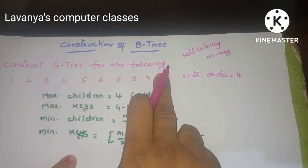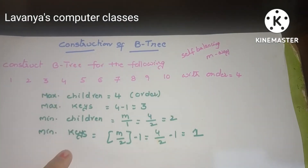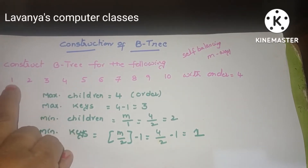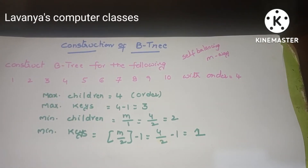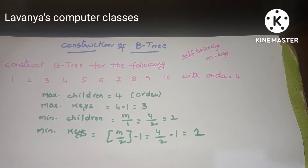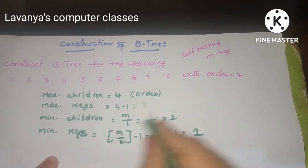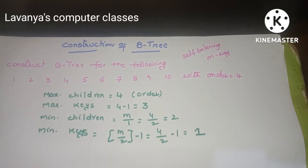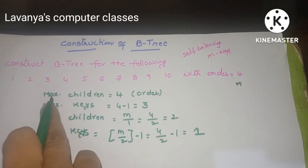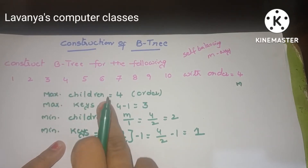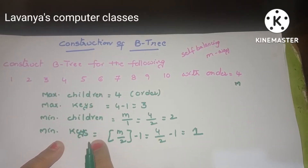Let's construct a B-tree for the following keys: 1, 2, 3, 4, 5, 6, 7, 8, 9, 10, with order 4. That is the important part — what depends upon the order we have to construct the B-tree. If the order is equal to 4, we also refer to it as M equals 4. There are two parts: the number of children and the number of keys.